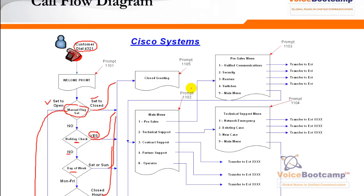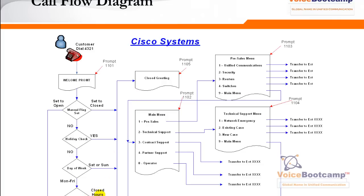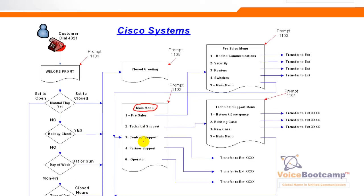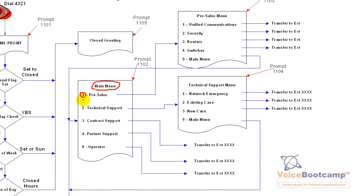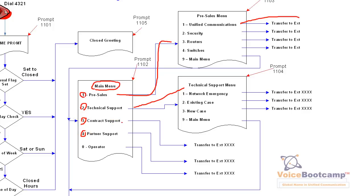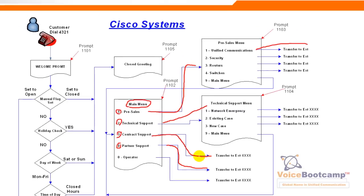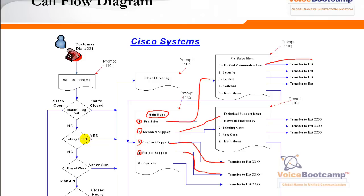If within business hours, Monday to Friday, the call goes to the main menu. The main menu gives options like press 1 for sales, press 2 for tech support, press 3 for contract support, and so on. Depending on which option you press, pre-sales will call another submenu with its own menu — press 1 for unified communication, which transfers to a given extension. These extensions are defined as variables and can be modified on a web page. For support, the call goes to a support menu. Contract support and partner support go directly to specific extensions.